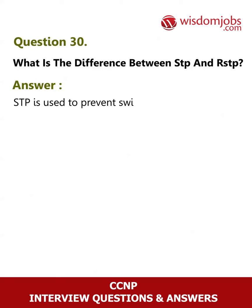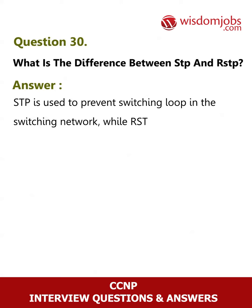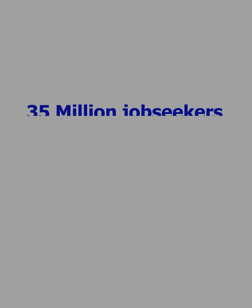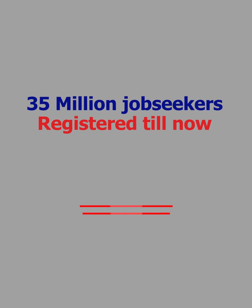Question 30: What is the difference between STP and RSTP? Answer: STP is used to prevent switching loops in the switching network, while RSTP is almost the same as STP except that the timing of port forwarding has been reduced, making convergence faster in the switching network.